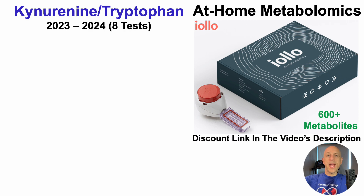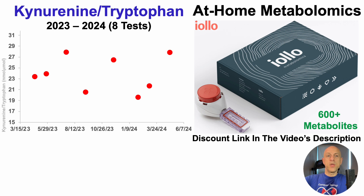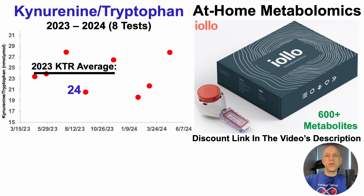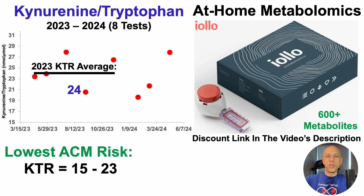I currently have data for eight tests for the kynurenine to tryptophan ratio, as we'll see here with the KTR on the y-axis. Over five tests in 2023, the average KTR was 24 nanomolar per micromolar. If you remember from the all-cause mortality data, the lowest all-cause mortality risk was in the 15 to 23 range, so I'm just outside of that.